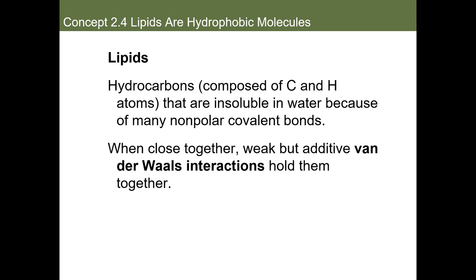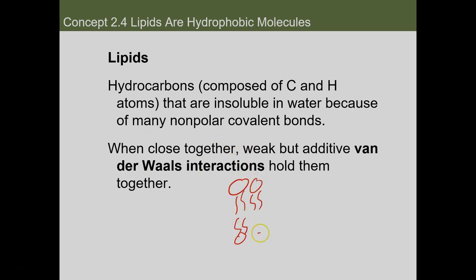Great examples of hydrocarbons besides lipids would be things like plastics, which are derived from oils. When close together, these lipids are weak but have an additive property known as van der Waals interactions that hold them together. That's due to the uneven distribution of electrons on those atoms. This van der Waals force keeps lipids — such as phospholipids — together, and that plays a very key role in lipid structure.